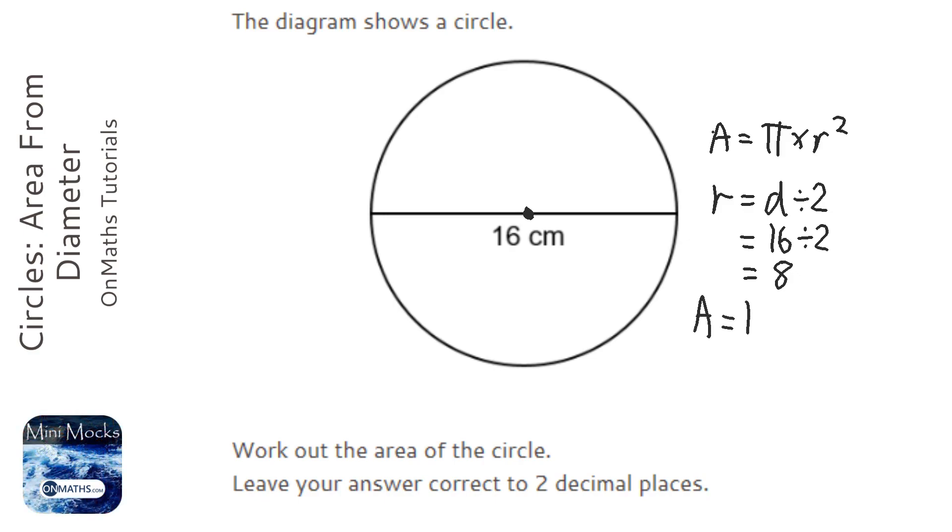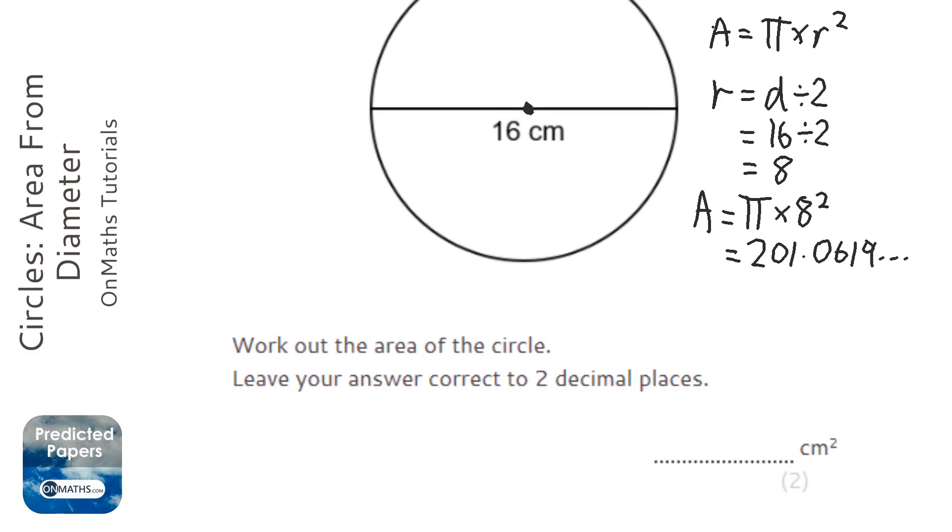So to find the area we are going to do pi times r squared. I am going to get my calculator and do pi times 8 squared. And it gives me the answer 201.0619 and so on. And to two decimal places that is going to be 201.06.